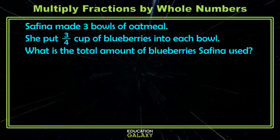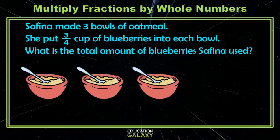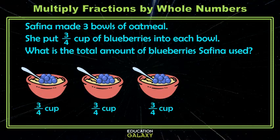Here, Safina made three bowls of oatmeal and she put three-fourths cup of blueberries into each bowl. We want to know the total amount of blueberries she used. So we have three bowls of oatmeal and we're putting three-fourths cups of blueberries into each bowl. So we could take that three-fourths cup and add it three times. But we just learned that we can use multiplication.